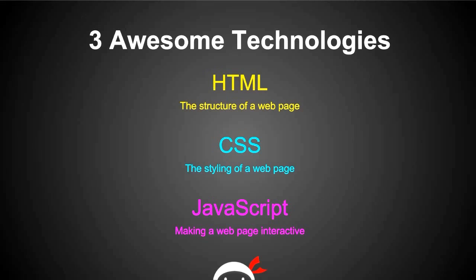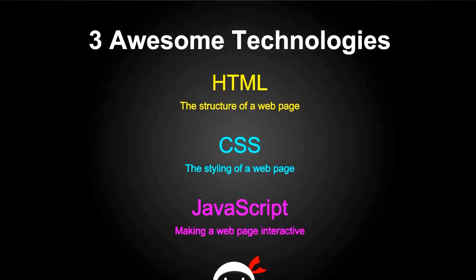HTML is one of three core technologies, and together with CSS and JavaScript you can create some great-looking websites. HTML, like we've said, is the structure of a web page. CSS is more to do with the design and aesthetics — if you want to change the page color, font size, font weight, font family, or position things differently on the website, you do that through CSS, which stands for Cascading Style Sheets. I'll be doing a course on CSS in the future.